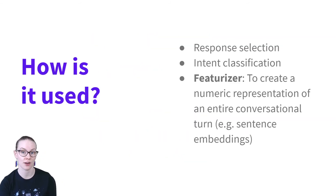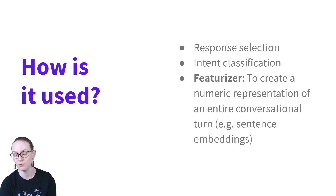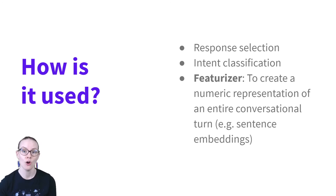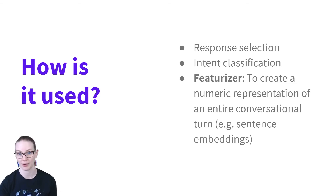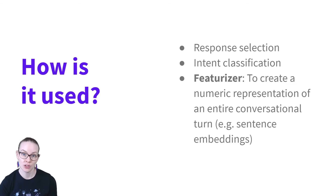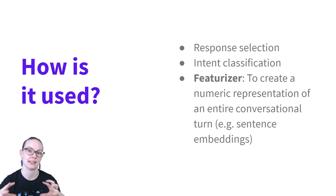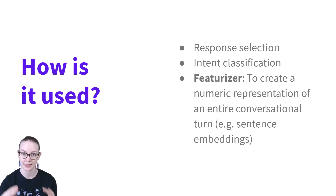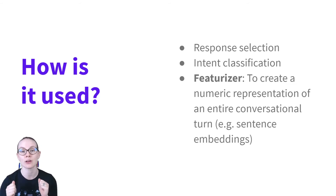The two applications of ConveRT discussed in the original paper are response selection, which we've discussed, and intent classification — taking in user input and assigning it to a number of predetermined categories. In Rasa, we use it as a featurizer: a way to take in the text input that a user provides, or your intents or responses, and convert that into a numeric feature you can use in the rest of your pipeline.